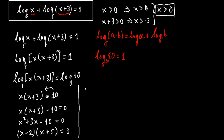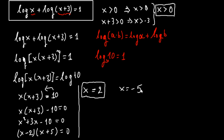So our two solutions are x equals 2 and x equals minus 5. But we have the restriction that x must be greater than 0, so x equals minus 5 must be rejected because it is a negative number. So our final and only solution is x equals 2.